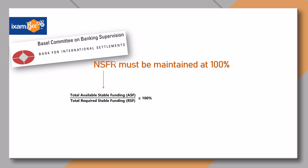The bank's total ASF or Available Stable Funding is the portion of its capital and liabilities that will remain with the institution for more than one year. And the bank's total Required Stable Funding is the amount of Stable Funding that it is required to hold given the liquidity characteristics and residual maturities of its assets.